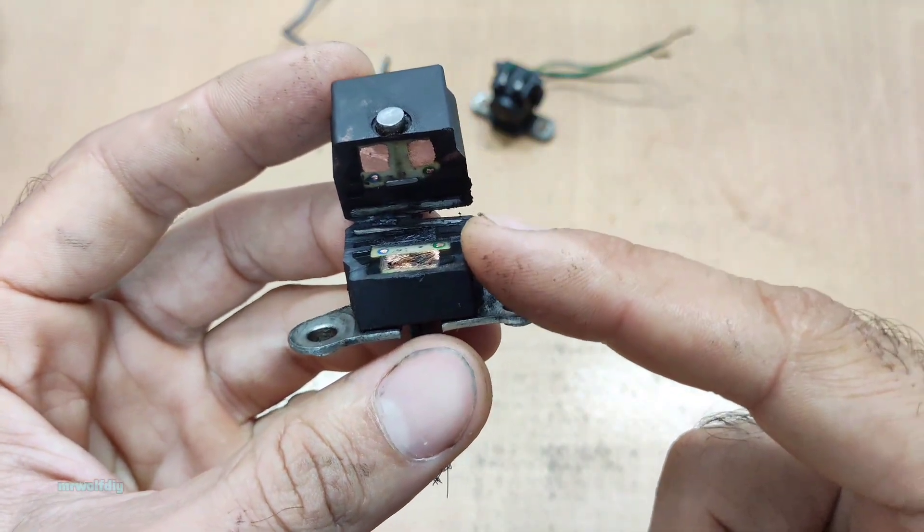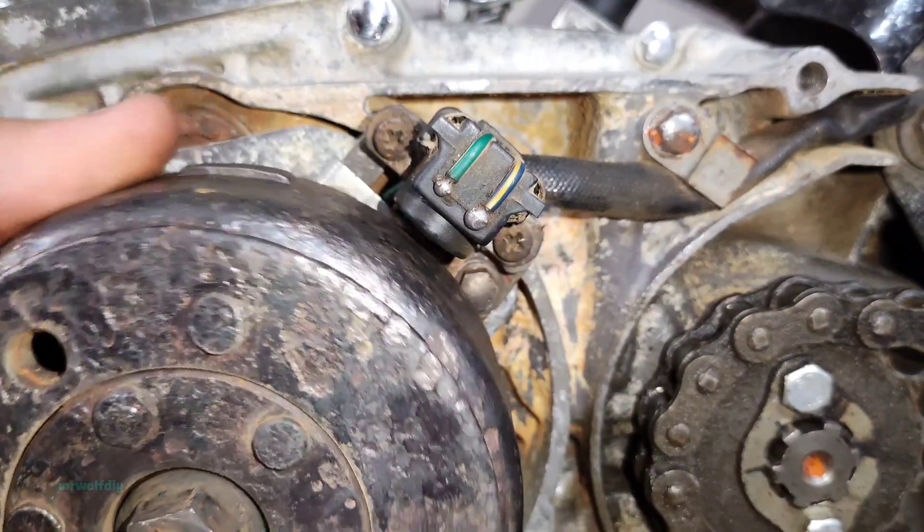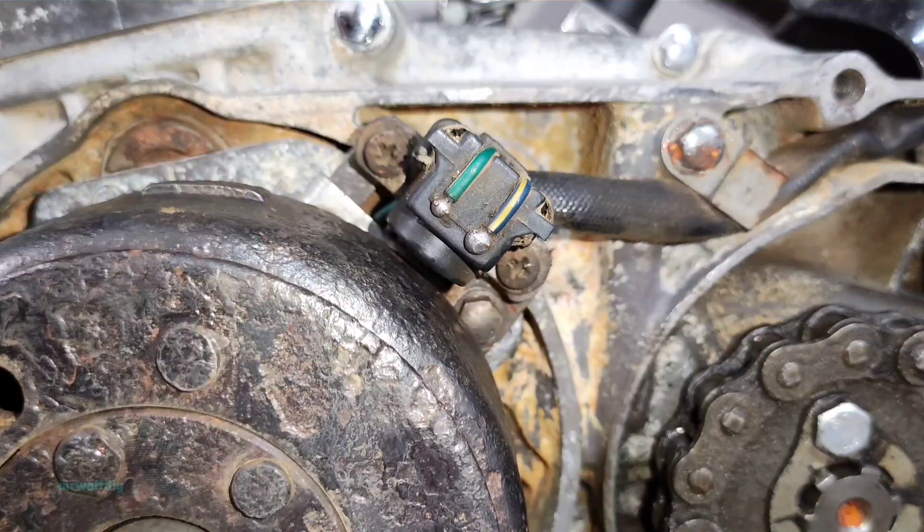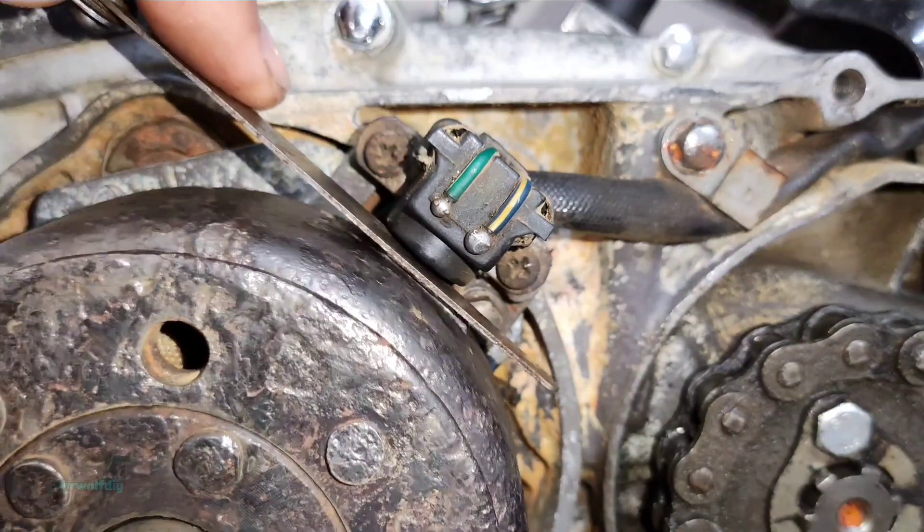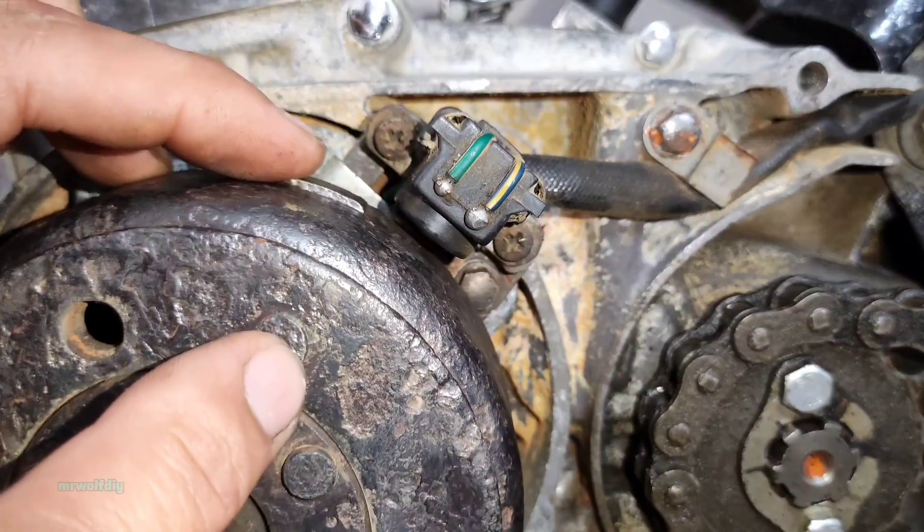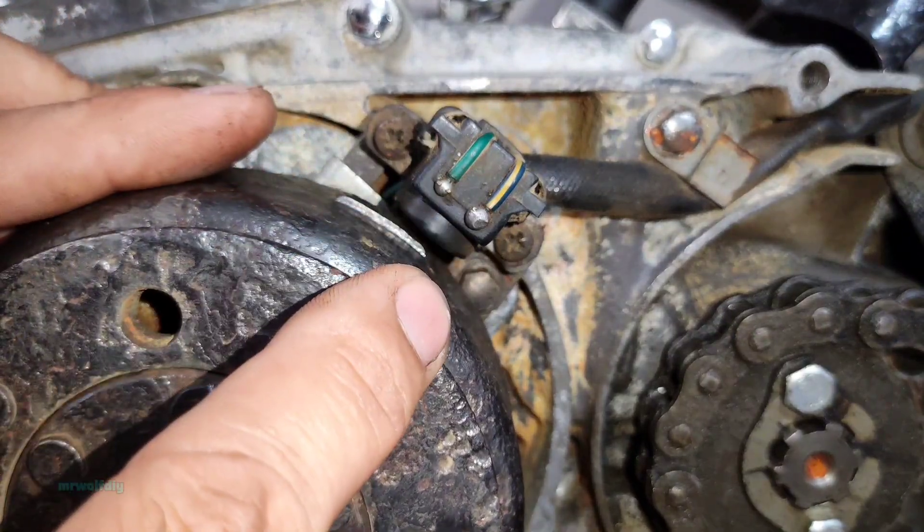It plays a very important role in the ignition system. Here's how it works. The pickup is installed close to the flywheel with a small gap. And when the metal tab on the flywheel passes by, it activates the magnetic inside the pickup.